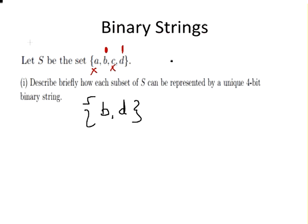What we could do is if the element is present we would put a 1, and if the element is not present we would have a 0. So in this particular case we would write this as 0101.